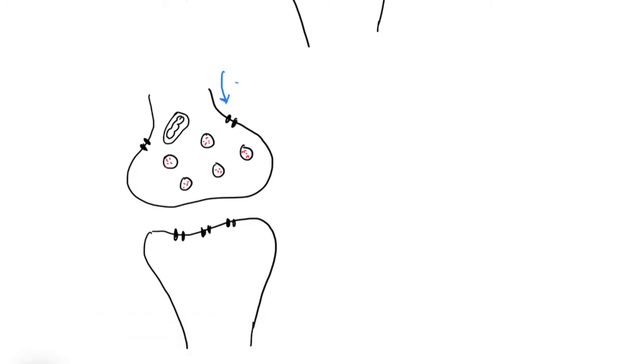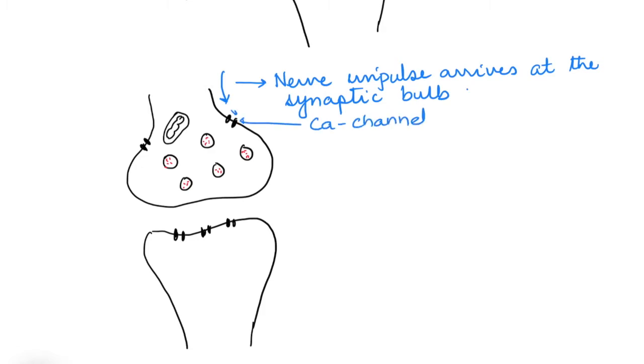So first we talk about the arrival of the nerve impulse. We know that it arrives in the form of a change in the polarity by opening sodium channels. Now as it reaches the synaptic bulb, this stimulates the calcium channels to open. When calcium channels open, calcium ions rush inside and they bind to the synaptic vesicles.